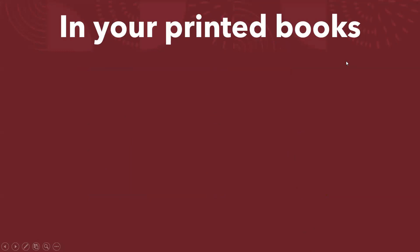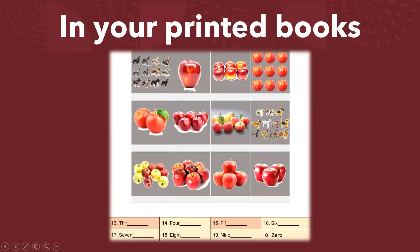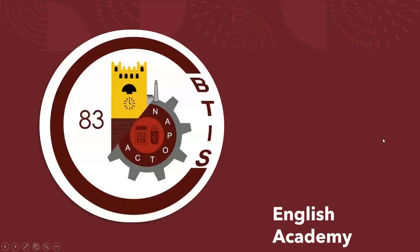Ahora, en tus libros impresos tienes esta actividad. Tienes que contar el número de objetos en cada imagen y escribir el número correspondiente en inglés debajo de cada una de ellas. Después, elegir la terminación que acabo de mencionar para cada uno de estos. Thank you.